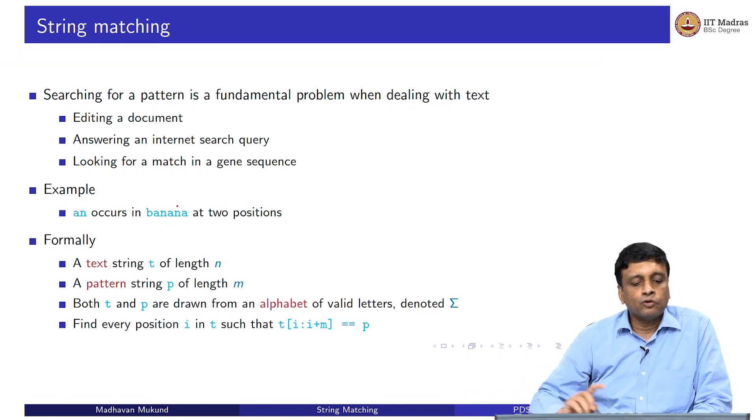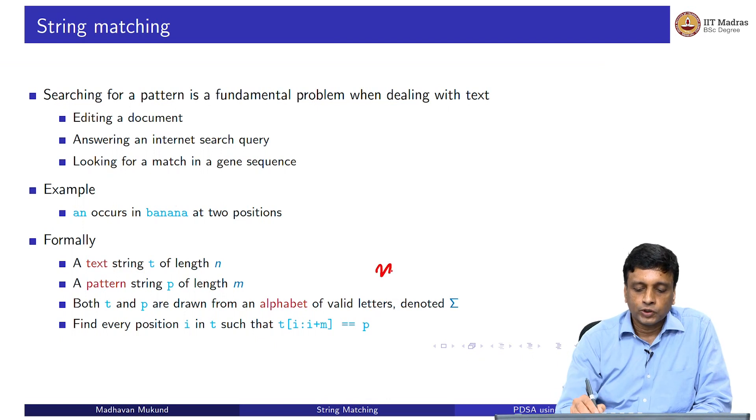The general question we could ask is given a piece of text and given a pattern which is another piece of text, and in general, we will assume that this pattern is not empty because if it is empty, it makes no sense to match it. Let us assume that we have a non-empty pattern and some non-empty text. The text will be of some length n, there will be n characters, the pattern will be of length m. And of course, m has to be smaller than n.